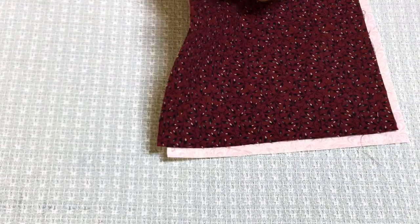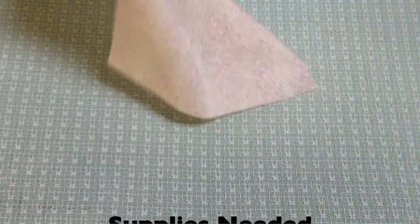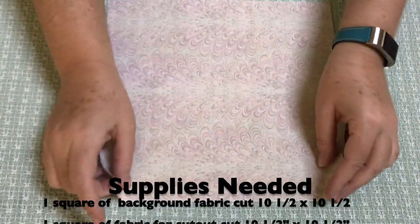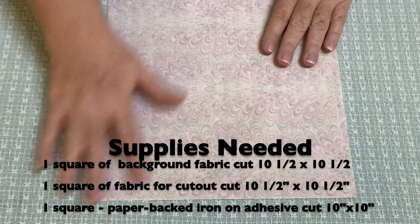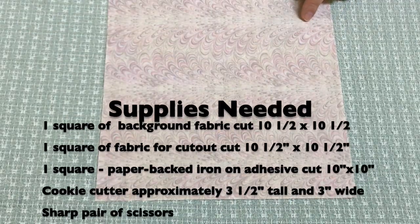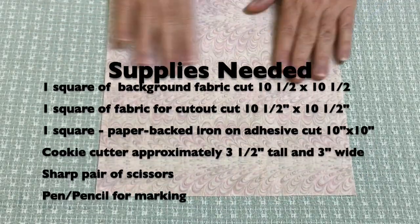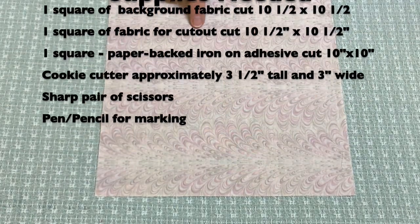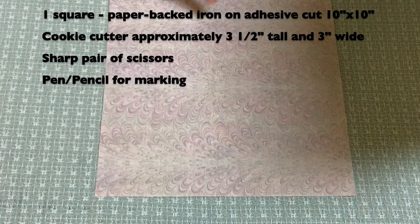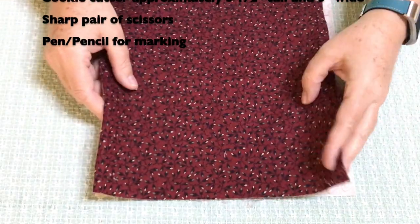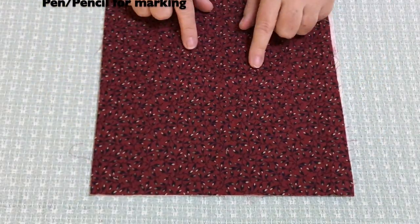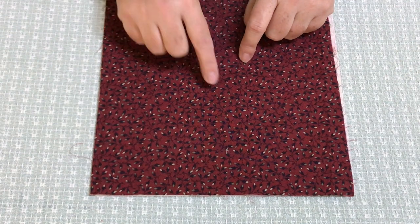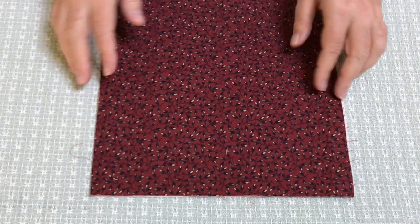Here's what you're going to need. You're going to need two squares of fabric. One square for the background, cut ten and a half inches square. This is a little bit directional but I'm not going to worry about that, it's a really subtle print. Then you're going to need one square cut ten and a half inches square for the cutout shape. In this case I'm using this burgundy with just a slight little pattern there, a little bit of interest to it.